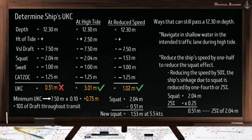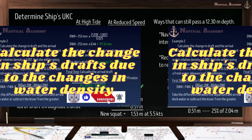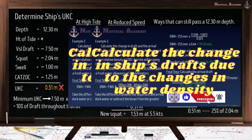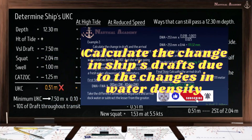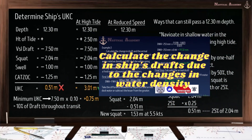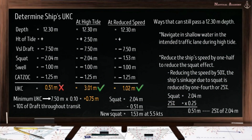In this example, we assumed the water density throughout the voyage is salt water. If there is a change in water density when passing shallow water, it should be considered in calculating the ship's UKC — especially when passing from higher to lower water density, because the effect will be an increase in ship's draft due to sinkage. I have made a separate video about the change in ship's draft due to a change in water density — kindly check the link in the description.